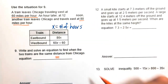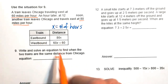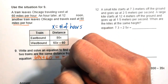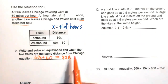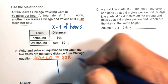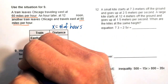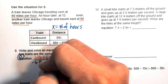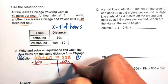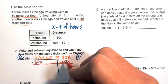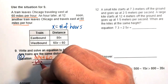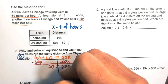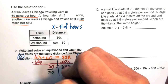Set the expressions equal: 60x plus 60 equals 80x. Choose sides — variables on the right, constants on the left. Subtract 60x from both sides: 80x minus 60x is 20x; the left side zeros out, leaving 60 equals 20x. Divide both sides by 20.